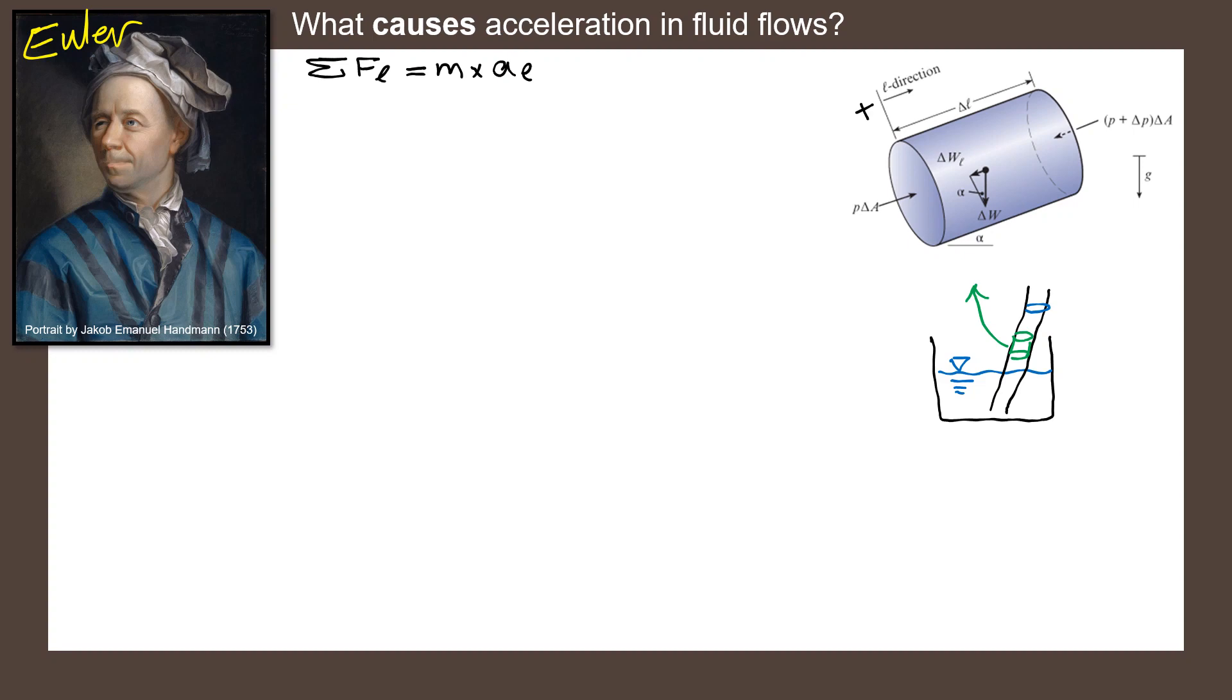Also, we know that mass is equal to ρ. Do you still remember the dimensions of ρ? The dimensions of ρ would be mass divided by length to the power of 3. So ρ times volume, which has the dimensions of L³, would be equal to mass. And the volume of this cylinder is simply ΔA, which is the cross-sectional area, times ΔL. So that's mass.